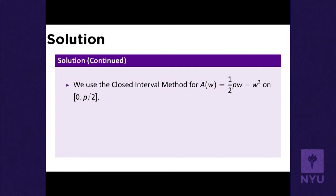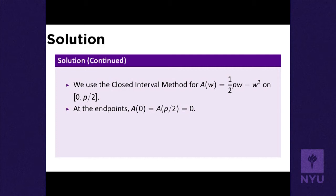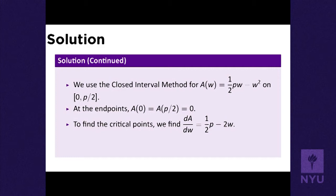If you're nervous about all the letters, just replace P with a number like 100. Let's apply the closed interval method: to find extreme values on a closed and bounded interval, evaluate the function at the endpoints and at any critical points. At the endpoints, A(0) = 0 and A(P/2) = 0 — you can verify by plugging in. One-half times P times P/2 gives P²/4, and W² at P/2 is also P²/4, so they subtract to zero.